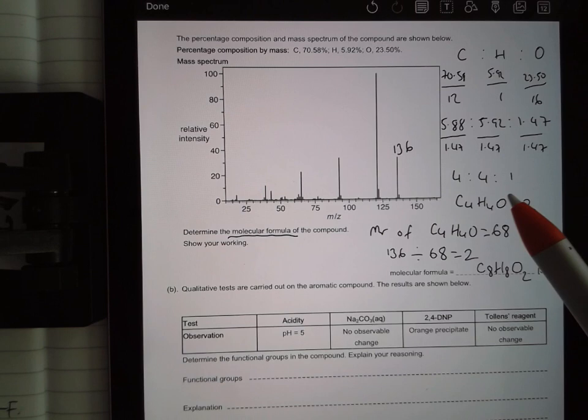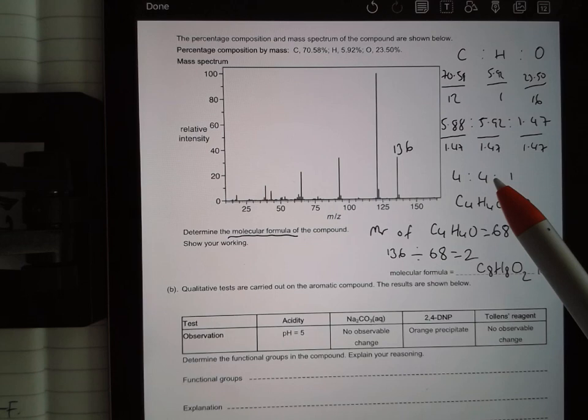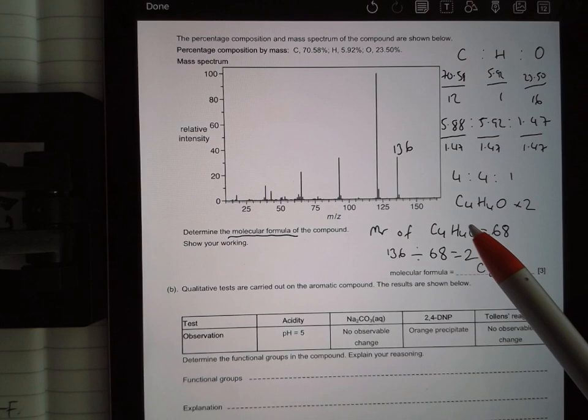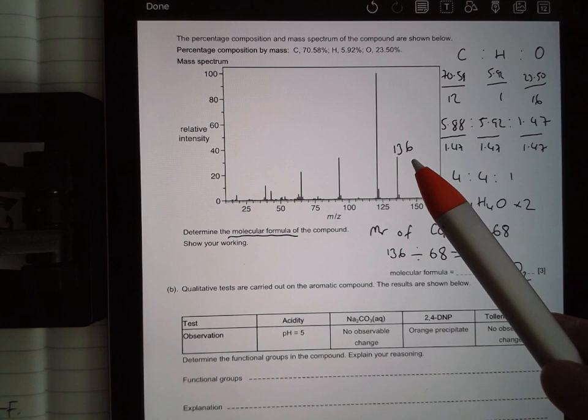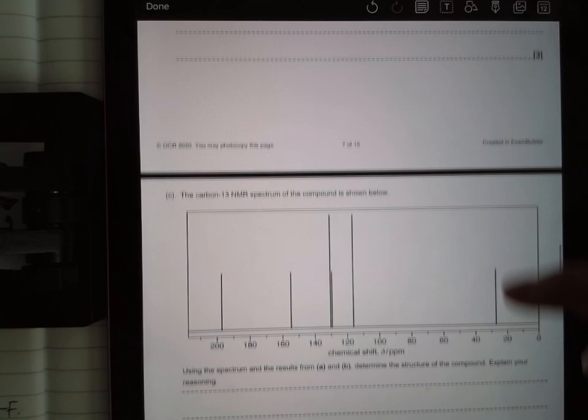So you work out the empirical formula, you get the formula mass of your empirical formula, you divide your molecular mass by the formula mass of your empirical formula, and then you multiply. I know it sounds like a long list of instructions, but it's pretty straightforward once you get the hang of it. Just be careful when you're reading your value off your mass spec, you're taking the molecular ion peak and not the M plus 1 peak. The rest of question 8, you don't actually have to do. We haven't done this yet, we'll be doing this in year 13. It's actually a really good question, one that we will definitely be coming back to because it tests you on lots of different things. But you don't have to do B or C yet.